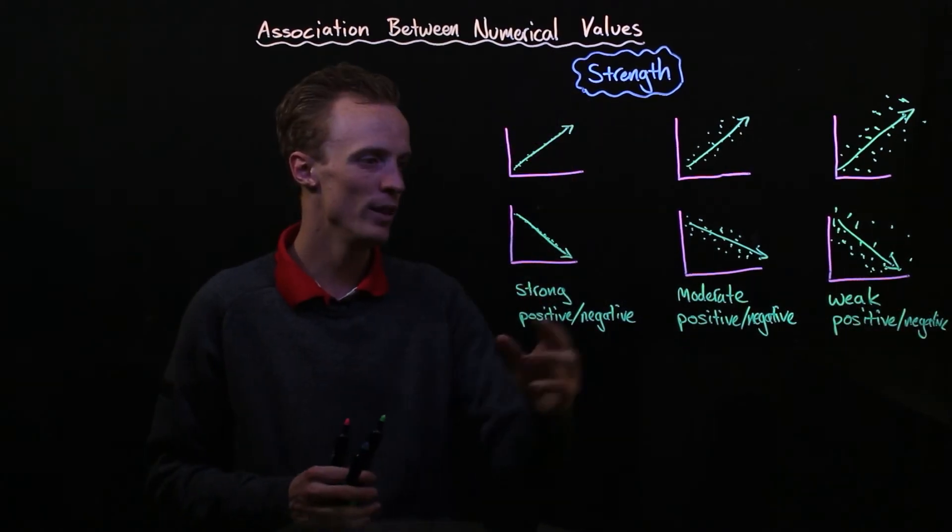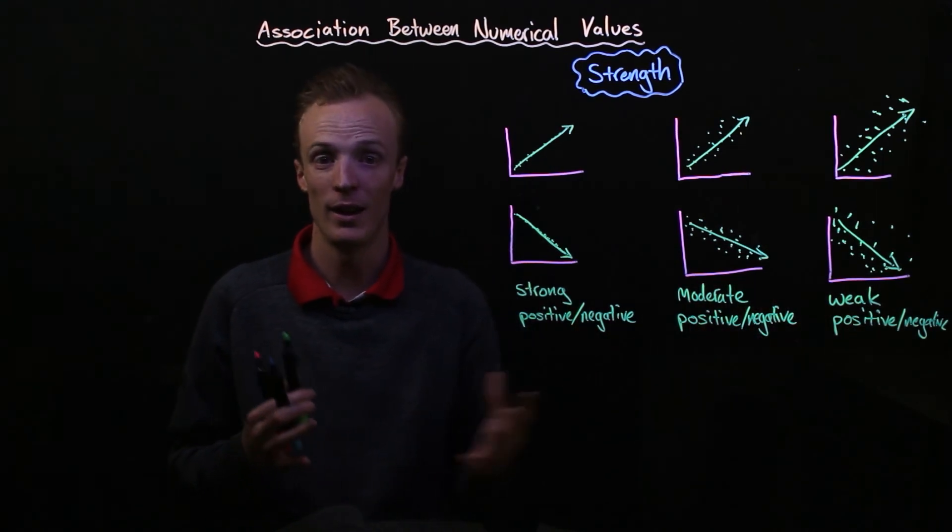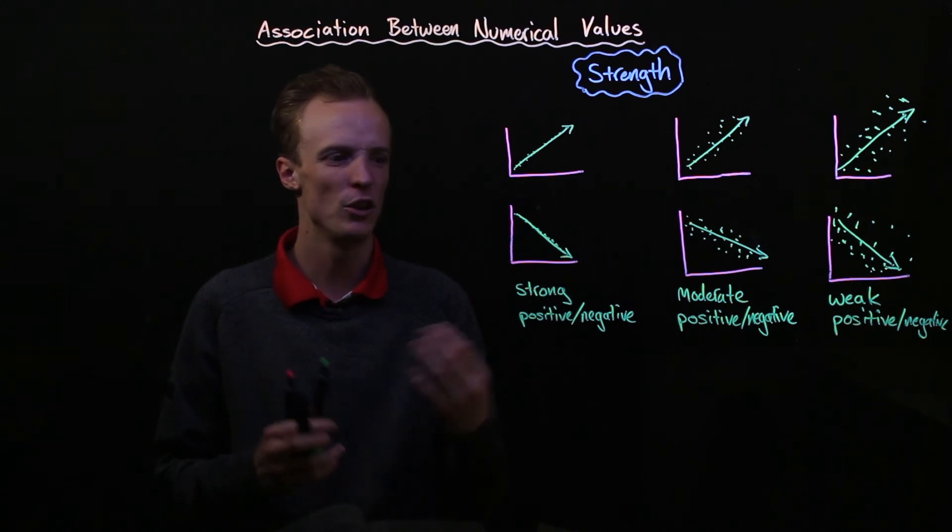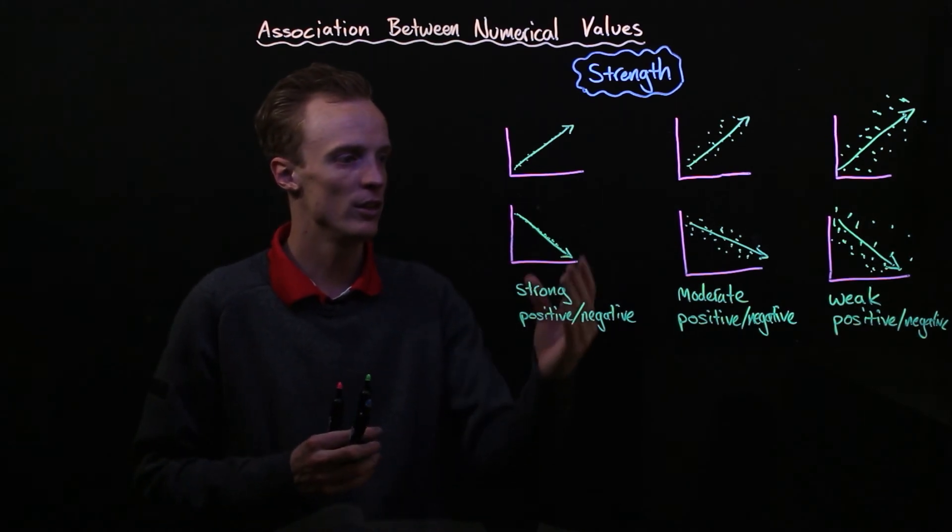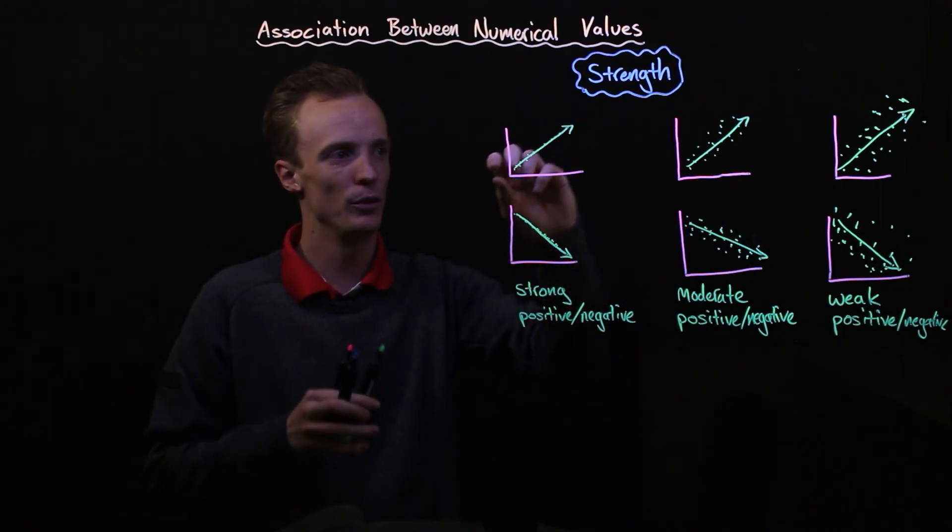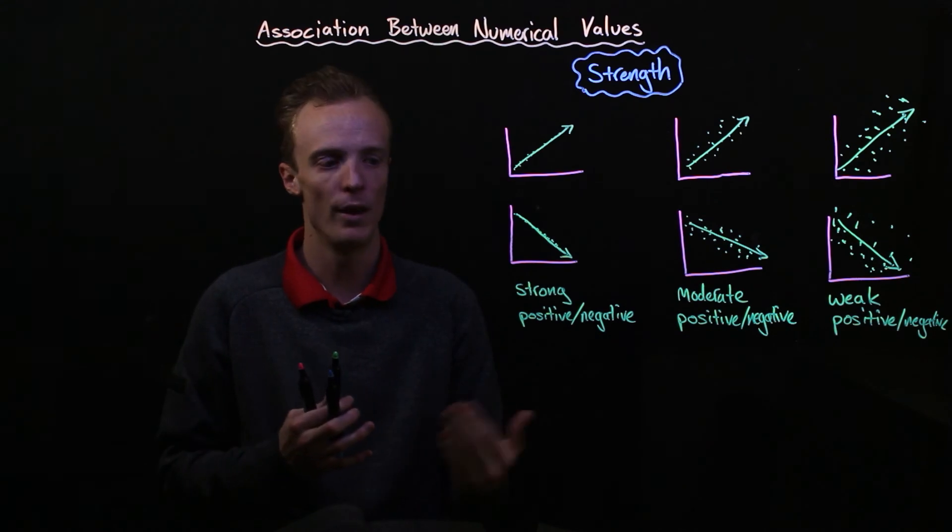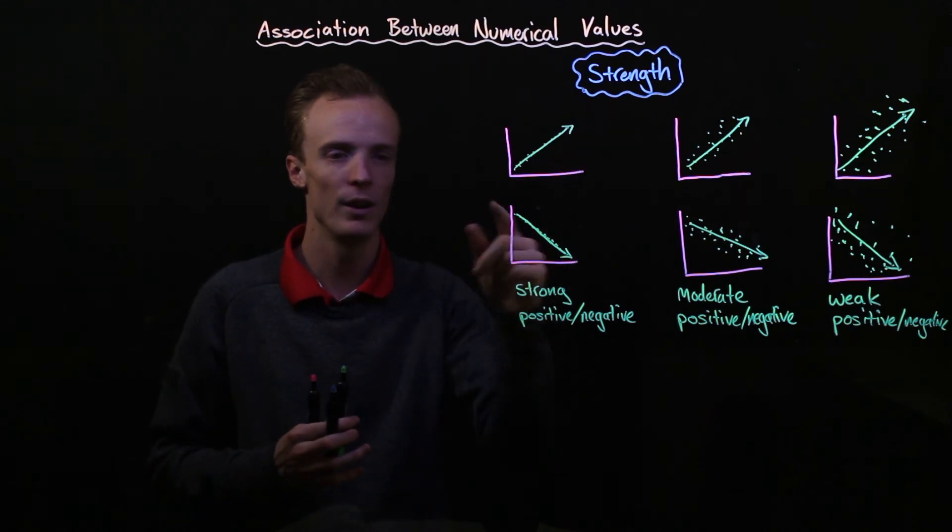With all these examples you should be able to notice a definite trend. If you can't notice a definite trend then there's no correlation. But you can see here that the closer the dots are to that sort of trend line the stronger the correlation is whether it's a positive correlation or a negative correlation.